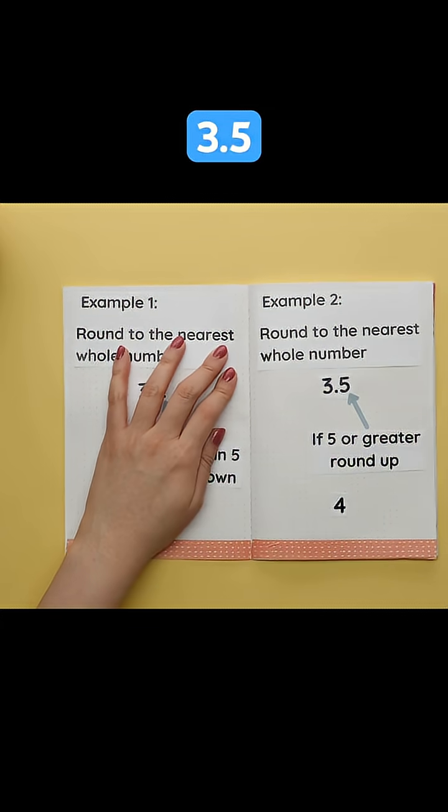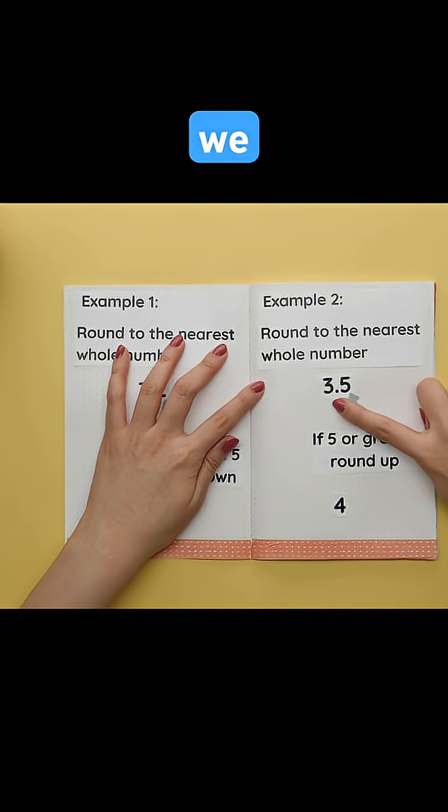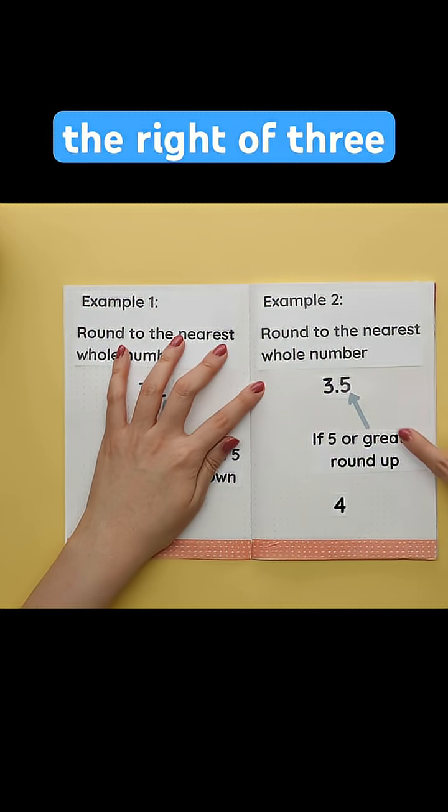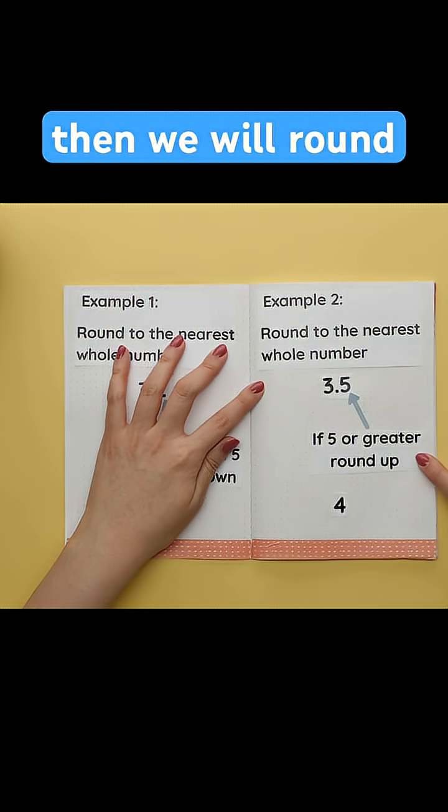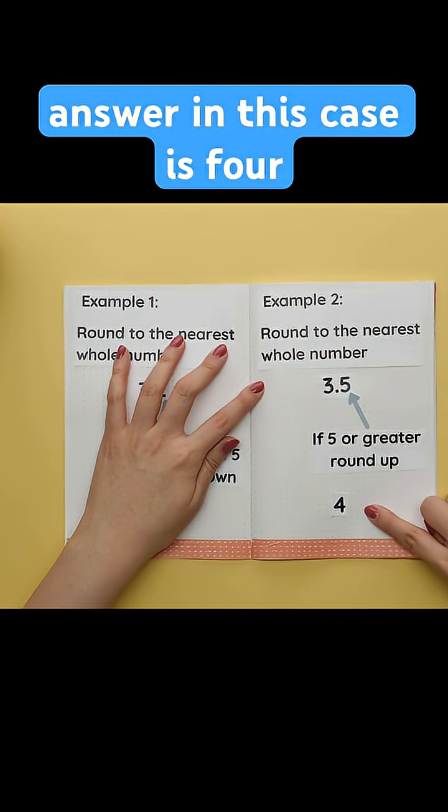If we wanted to round 3.5 to the nearest whole number, we would look at the number to the right of 3, so 5. If a number is 5 or greater, then we will round up. Our answer in this case is 4.